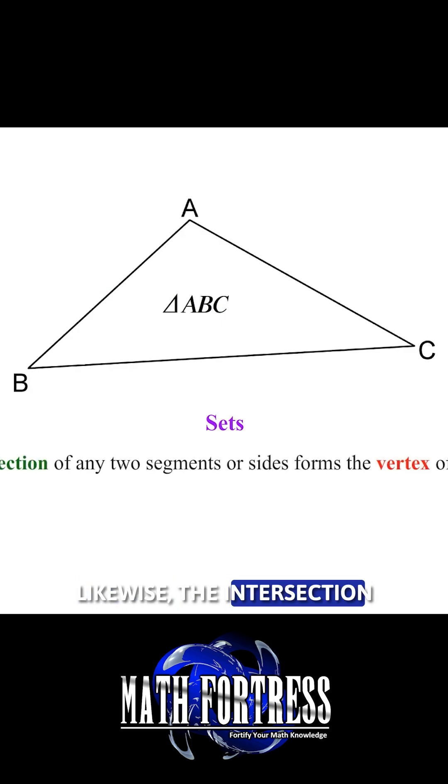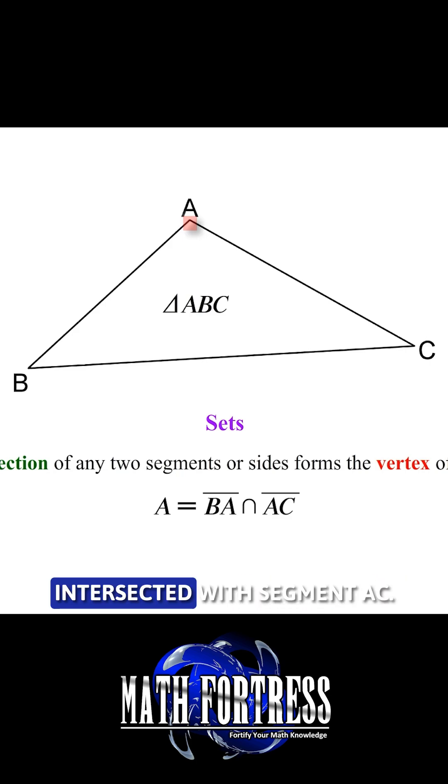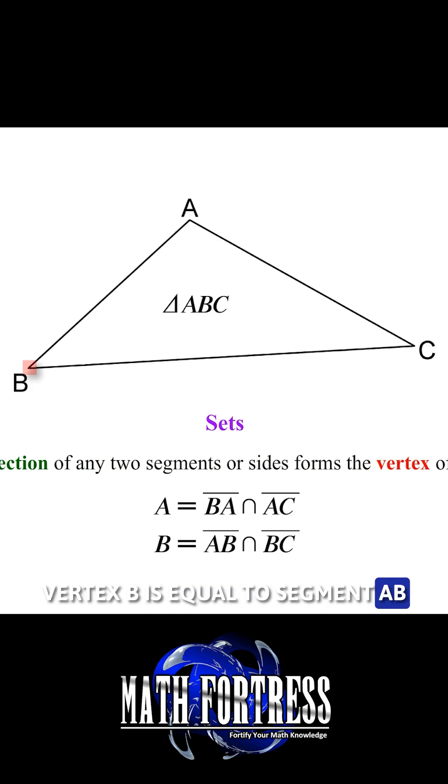Likewise, the intersection of any two segments or sides forms the vertex of a triangle and can be denoted using set notation as follows. Vertex A is equal to segment BA intersected with segment AC. Vertex B is equal to segment AB intersected with segment BC.